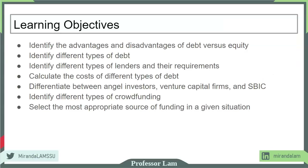Here are the outlines of the learning objectives that we'll cover in this chapter. For each type of capital, we're going to look at the advantages and disadvantages, especially the big categories of debt versus equity. Then we're going to go into details about each type, both debt and equity. We'll also address new capital financing options such as crowdfunding.